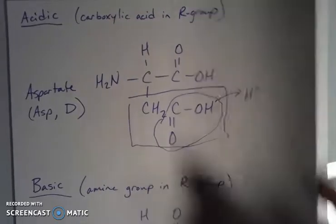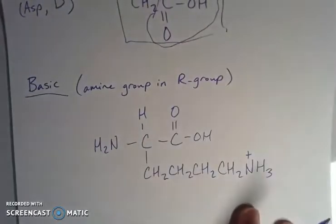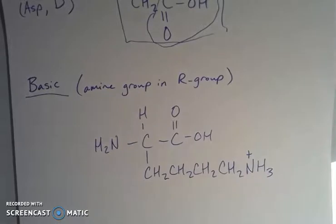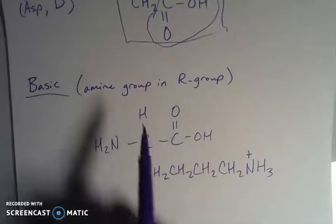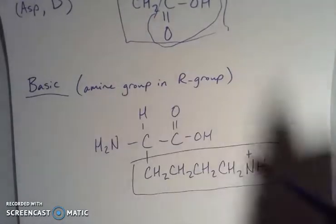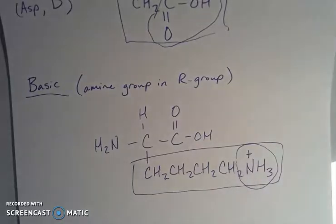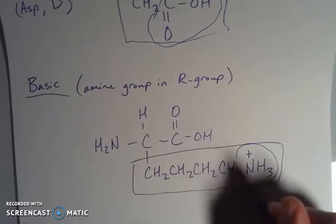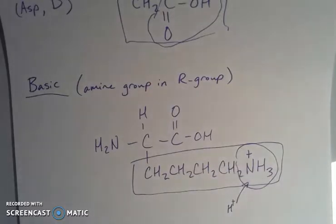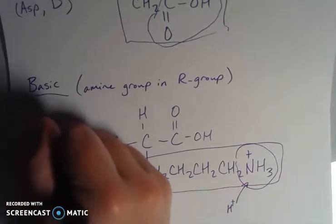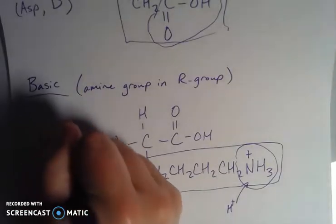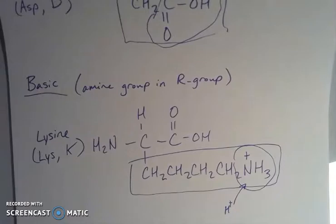Now on the basic side of things, we're getting bigger and more complicated. But the feature that we're looking at, here's our alpha carbon, amine, carboxylic acid. Here's my R group. The feature I'm really looking at is this amine group at the end. This is an ammonium, actually, because I have a hydrogen that has come onto it, if we think Bronsted-Lowry. My hydrogen has come onto this guy, making it basic because it is accepting the proton. This is called lysine. The three-letter abbreviation is LYS. And for reasons unknown, the one-letter abbreviation is K.